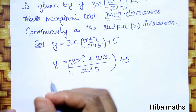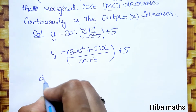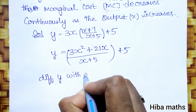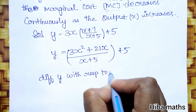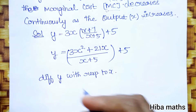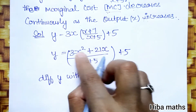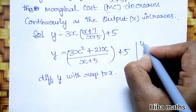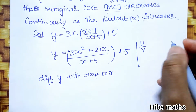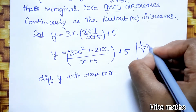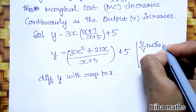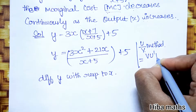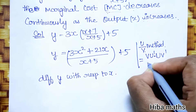Let's differentiate. We differentiate y with respect to x to find the marginal cost. Since we have a fraction, we use the u by v differentiation method: the derivative equals (v·u' minus u·v') divided by v squared.